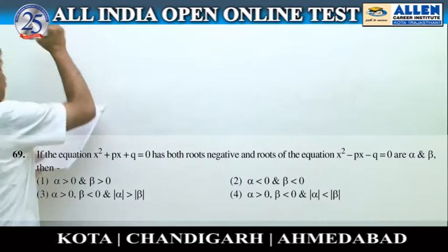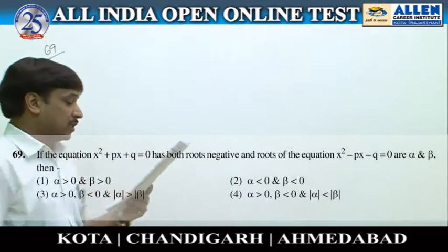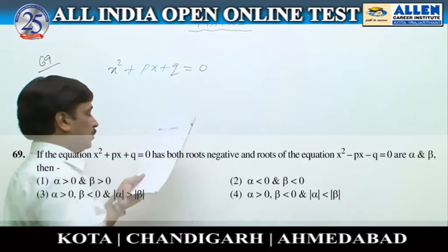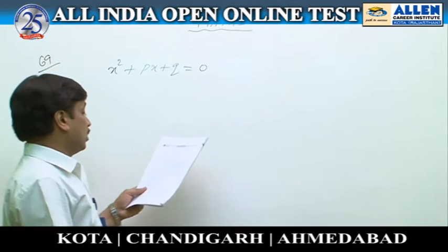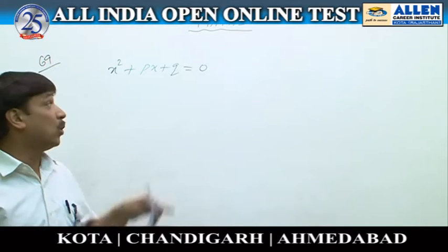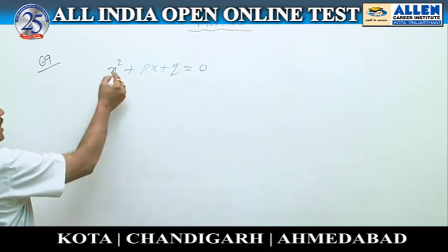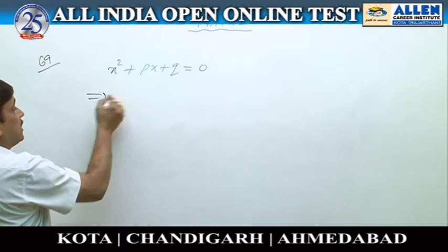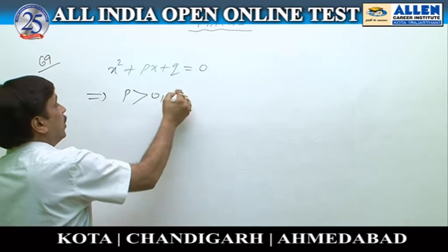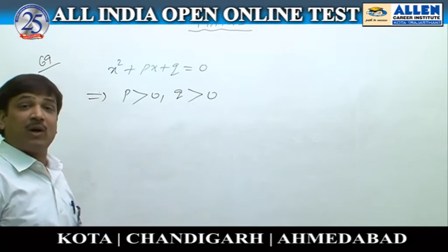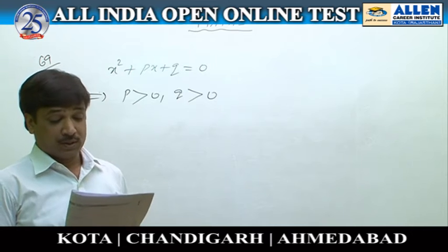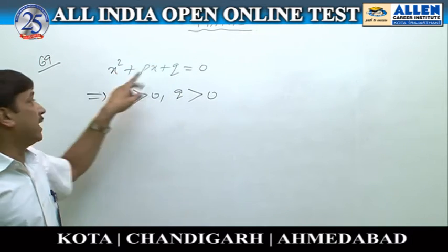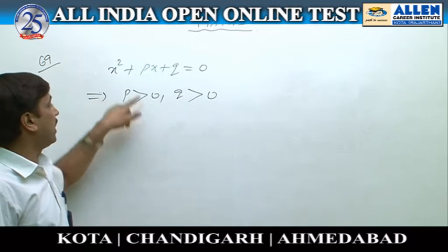Question number 69. In this question, a quadratic equation x² + px + q = 0 is given, and it is given that this equation has both roots negative. The x² coefficient is 1, which is already positive. This implies that p should be greater than 0 and q should be greater than 0, because if a quadratic equation has both roots negative, all the coefficients should be positive.